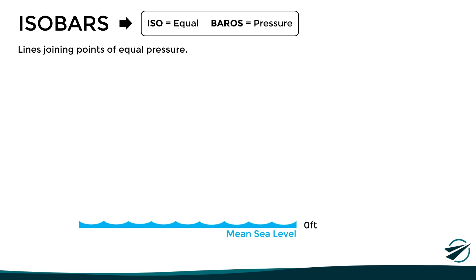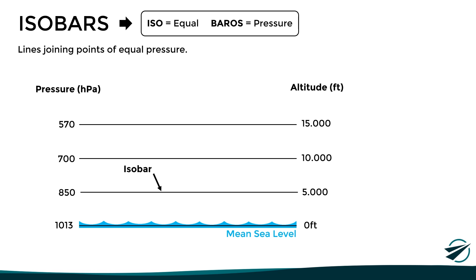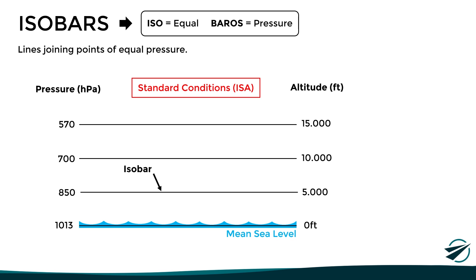Here we have the mean sea level where the pressure is around 1013 hectopascals, so the 1013 isobar is located right there. If at an altitude of 5,000 feet we get a pressure of 850 hectopascals, then we can draw the 850 isobar at that level. Continuing, at 10,000 feet and 15,000 feet we would find the 700 and 570 isobars respectively. It is important to bear in mind that these pressure values are found only under standard atmospheric conditions, since temperature variations can affect the position of these isobars.